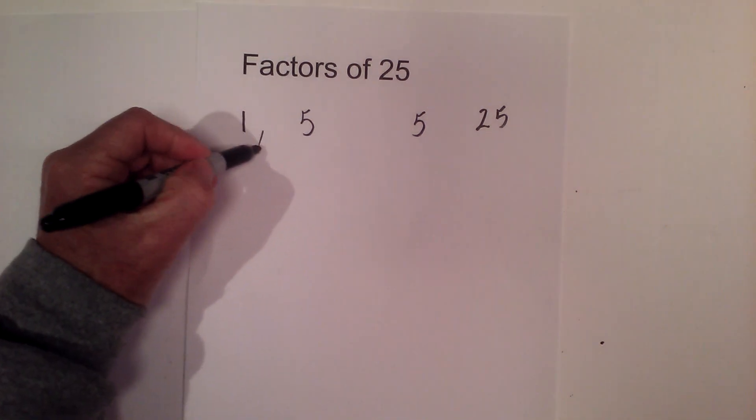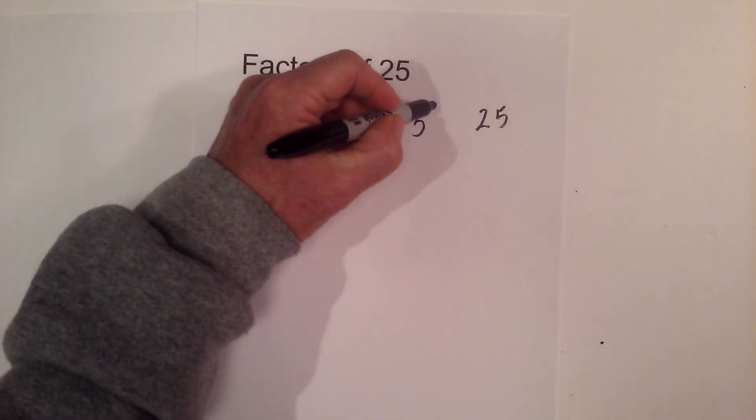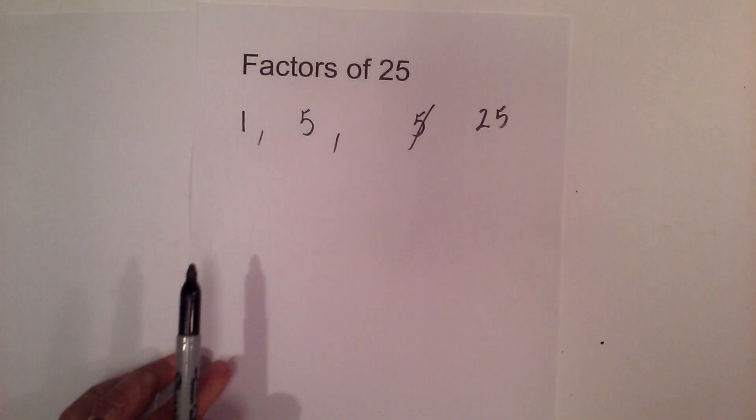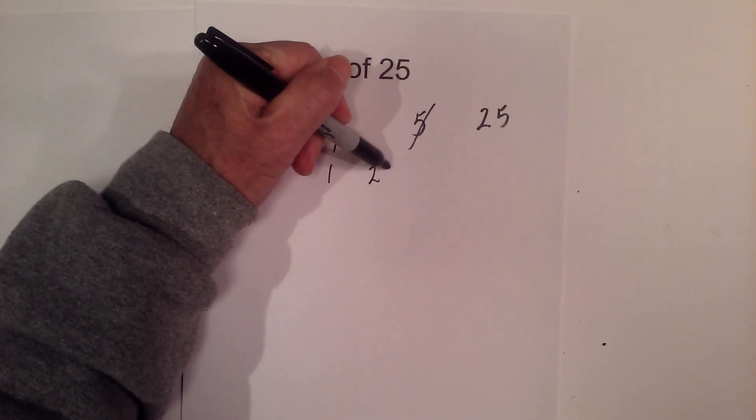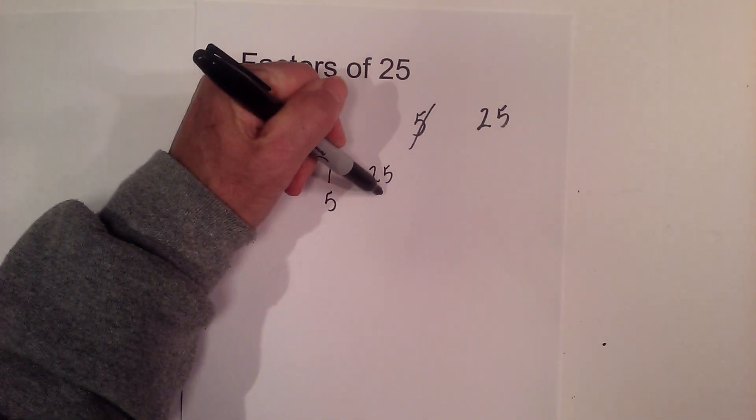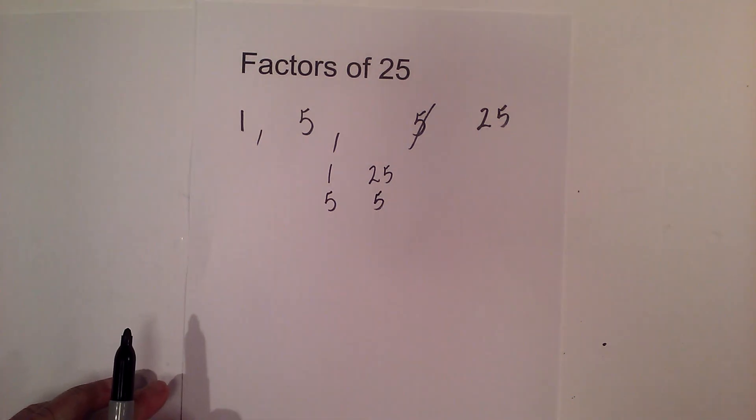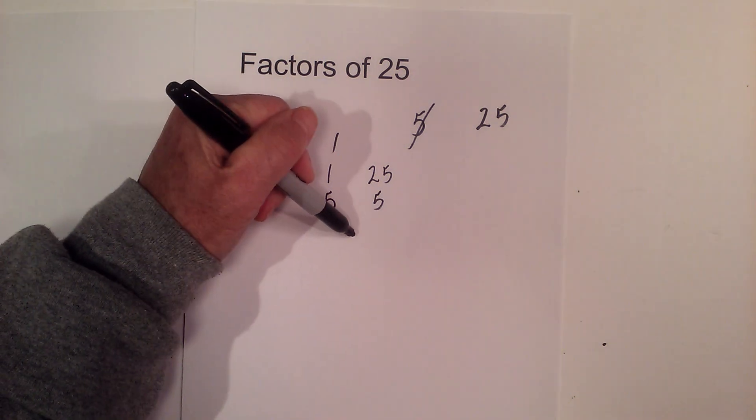The factors are 1, 5, I'll cross this out, and 25. If you'd like to see the pairs of numbers, it's 1 times 25 and then 5 times 5. Now let's also create a factor tree so that we know all the prime numbers of 25.